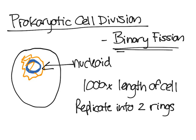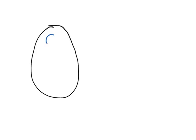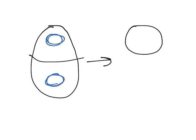Binary fission is essentially just the cell splitting in two. After the cell has copied its chromosomes, it essentially just splits in half, and you get two cells. It's the same concept as eukaryotic cell division, but there are some differences because the cells are fundamentally structurally different — for instance, there's no nucleus in prokaryotes.